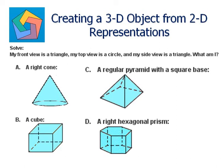I need the front view to be a triangle. A cube and a right hexagonal prism do not possess a front view as a triangle. Let's look at the regular pyramid with a square base. Here if you look from the top, the top view is going to be a square, but we require a circle. So this cannot be the answer option.